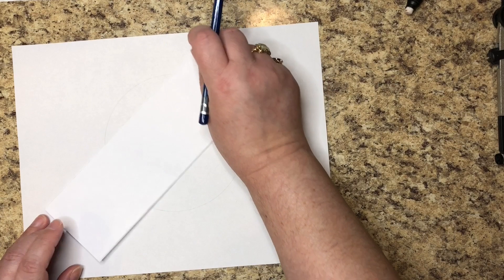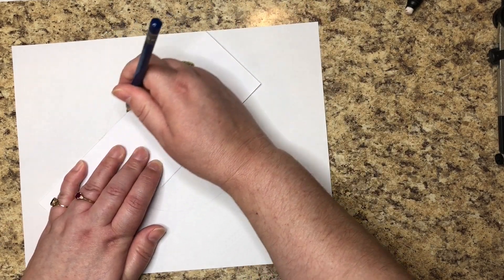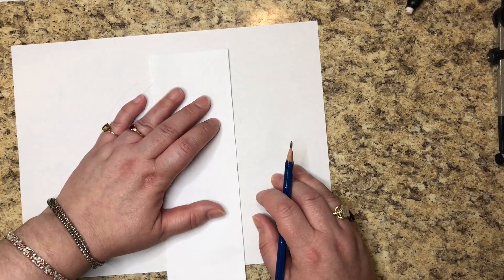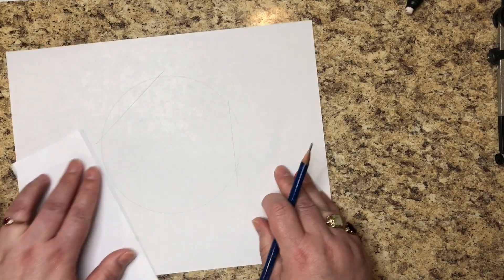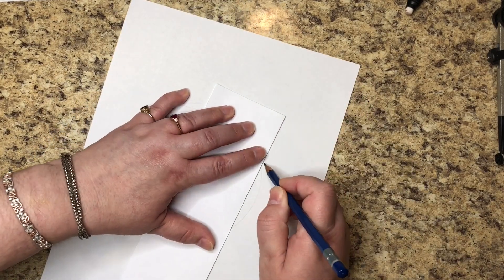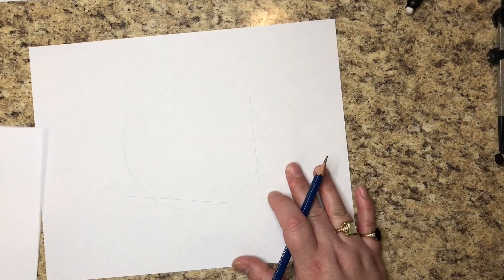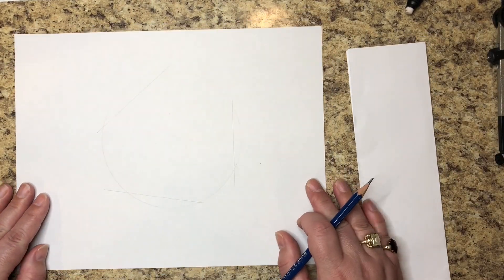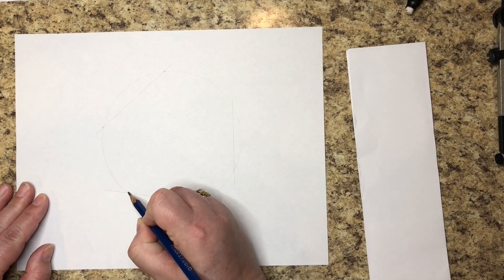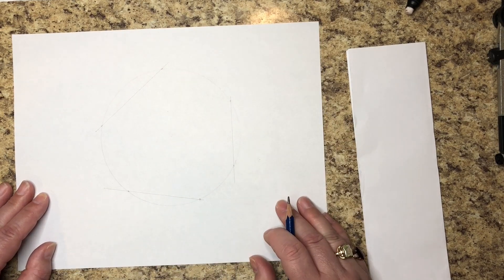Now we're going to draw three random lines across the circumference of the circle. Doesn't matter where you draw them, doesn't matter how long you draw them. All right, there we go. So we have three lines across the circumference of our circle. Mark the point where they hit the circumference of the circle. Those points are going to be where we put our compass.